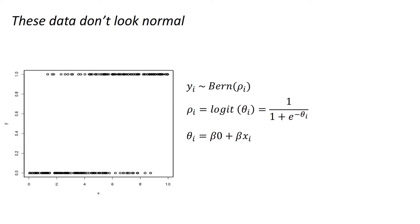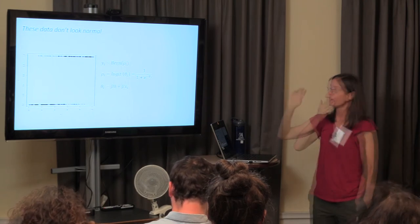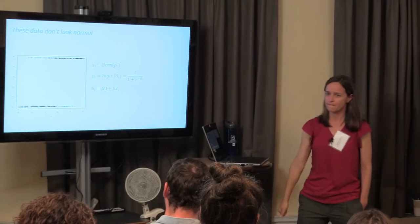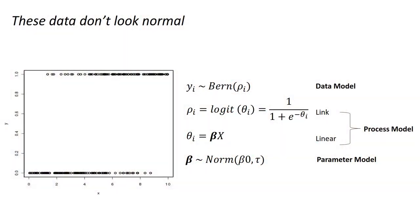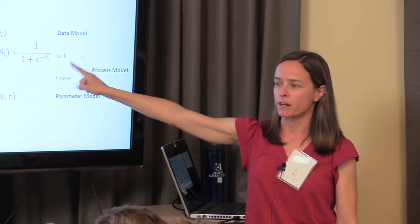Another common example of data that don't look normal: binary data. You can use a binomial or Bernoulli distribution to look at the probability of a success — for instance, seed germination. The probability in this case is treated with a logit transformation, which puts the probability space from zero to one into something more like a normal distribution, and you can model that as a linear model. The important thing to think about is that we've got our data model — we're not assuming a normal distribution; we're assuming we're sampling from a true population of zeros and ones. Then we have this link that makes it linear, and both of those together are part of your process model. As you collect more data, you get a better estimate of that process model, and because we're Bayesian, we also have our parameter model.